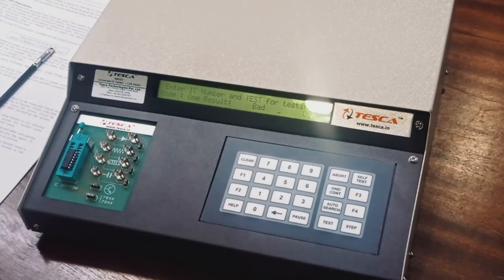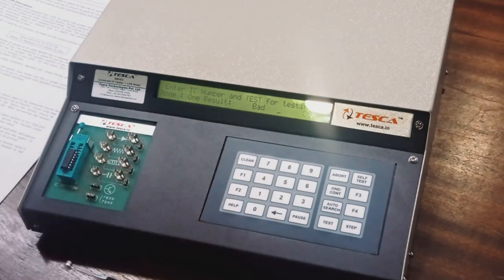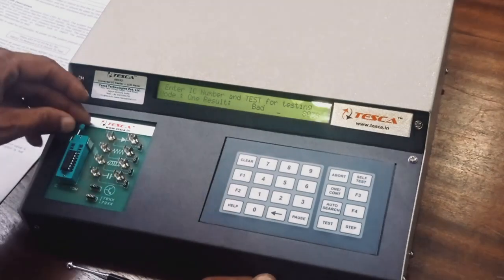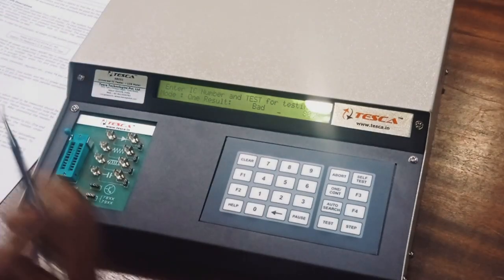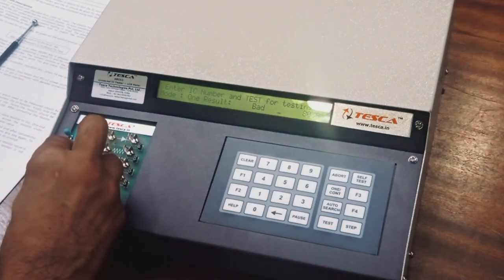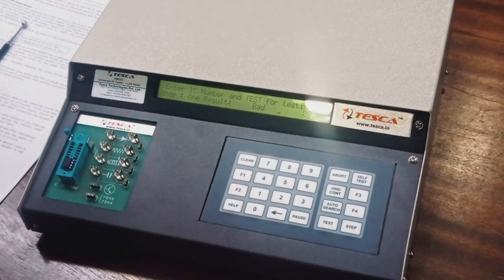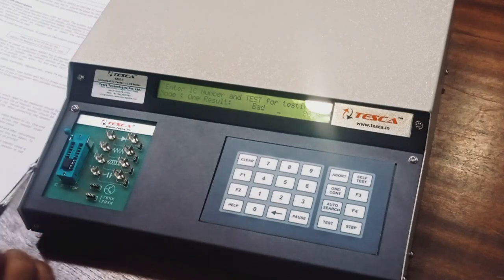One buzzer is also there. And this result is bad. Means this IC is problematic or faulty. Now we have one 8-pin IC. This IC is LM358. We have to put this IC. We have to always take precautions of the pins, the starting pin of IC.